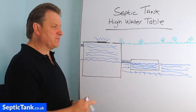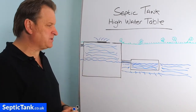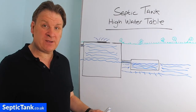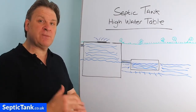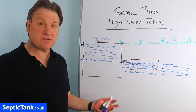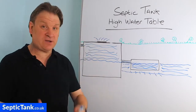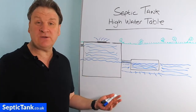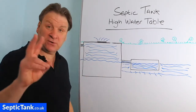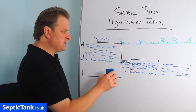That's the problem associated with having a high water table. Many people ring me up and ask — our water is not soaking away, it's overflowing onto the grass, what can we do? So I'm going to show you two really simple solutions now.